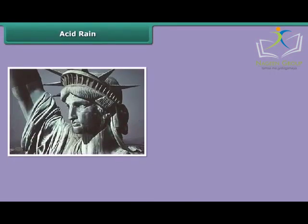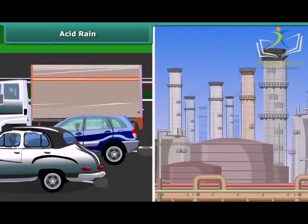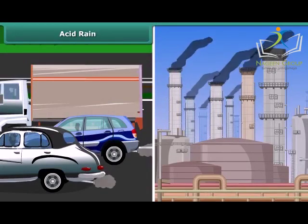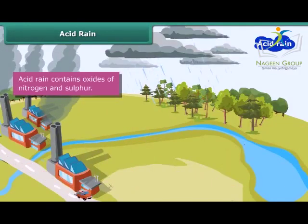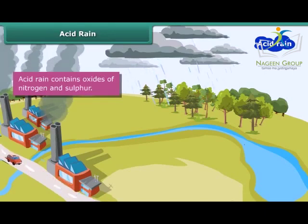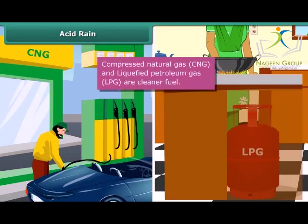These are images of the Statue of Liberty in New York and the Taj Mahal in Agra — both badly damaged due to acid rain. Industries and vehicles release toxic gases like sulfur dioxide and nitric oxide into the atmosphere. These gases react with water vapors present in the atmosphere to form sulfuric acid and nitric acid, which fall as acid rain. Use of clean fuels like compressed natural gas (CNG) and liquefied petroleum gas (LPG) can reduce the acidity of rain.